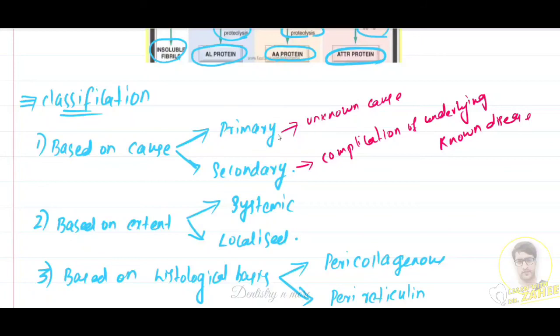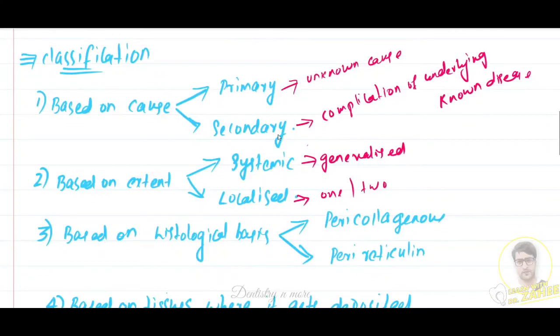Next classification is based on the extent of amyloid deposition: systemic or generalized where the prognosis will be very less, involving multiple organs, versus localized amyloidosis involving just one or two organs. Based on histological basis, it can be pericollagenous or perireticuline types. Pericollagenous corresponds in distribution to primary amyloidosis and perireticuline corresponds in distribution to secondary amyloidosis.